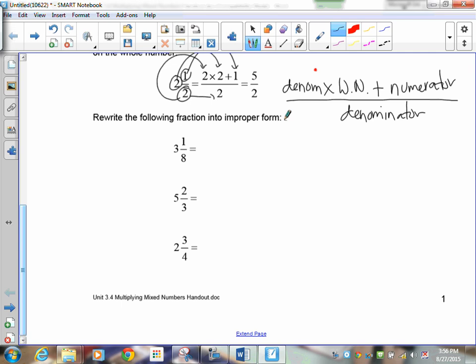I want you to try to do these three. So pause the recording and do it. All right, you should be done now. 3 and 1 eighth becomes 8 times 3 plus 1 all over 8. 8 times 3 is 24, so this becomes 25 over 8. 3 times 5 plus 2 all over 3. 3 times 5 is 15 plus 2 is 17 over 3. The last one is 2 and 3 quarters, so it's 4 times 2 plus 3. We're still working in quarters. So 4 times 2 is 8 plus 3 is 11 over 4. So that's how you get from a mixed fraction to an improper fraction.